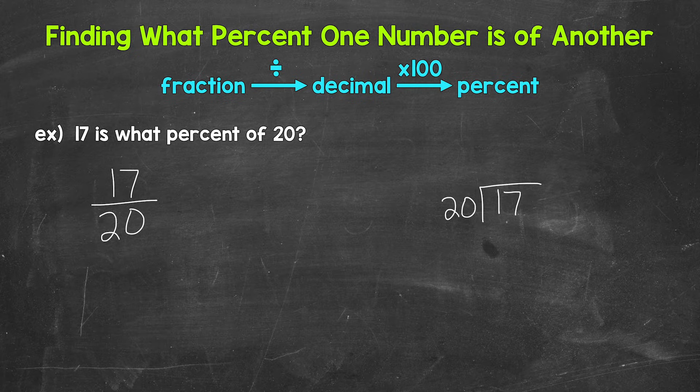Well, we can't do that. So we need a decimal and a zero in order to work through this. Once we have the decimal and the zero, we bring the decimal straight up into where the quotient, the answer will be.